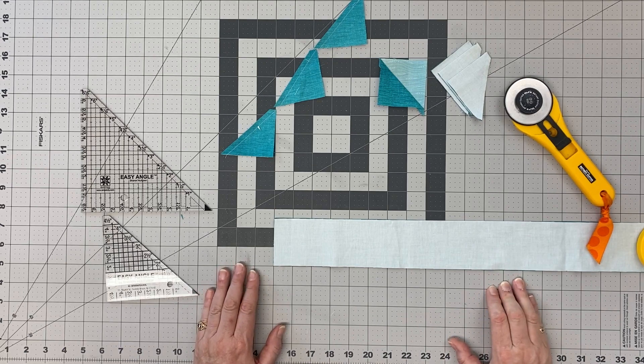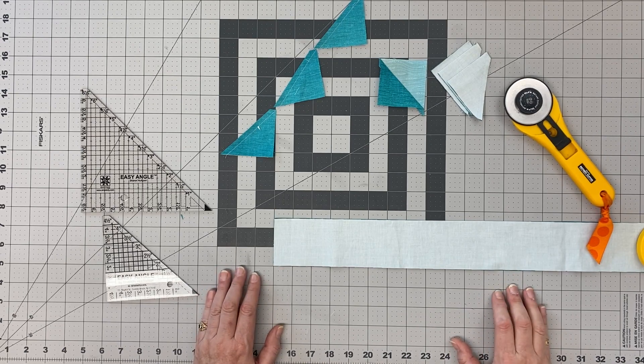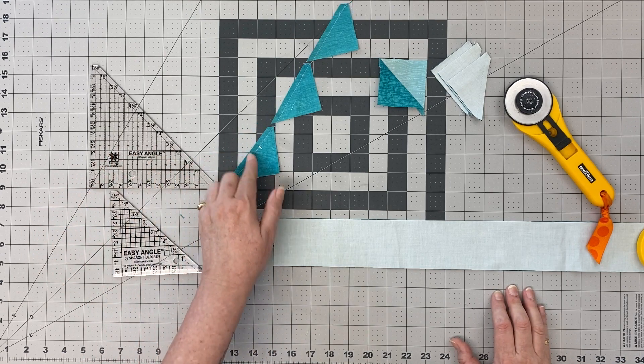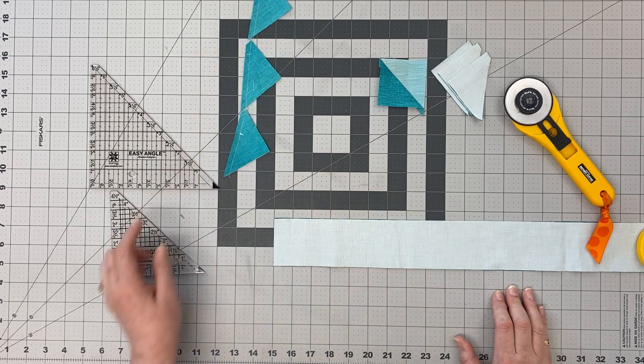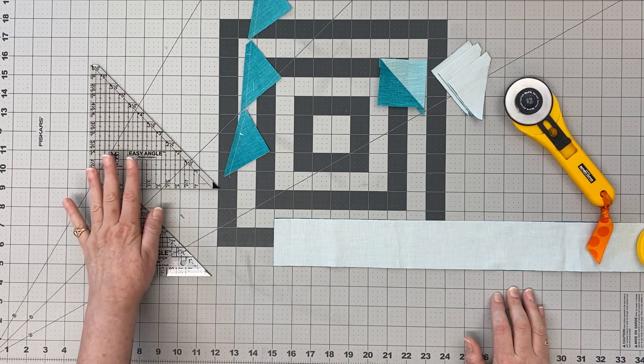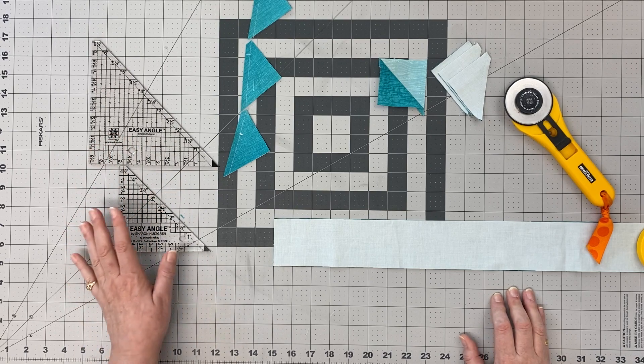Hi everybody, this is Sam Hunter at Hunter's Design Studio. Today I'm going to show you how to make half square triangles, or HSTs, using the easy angle ruler. I like this little ruler. It's possible to use it to